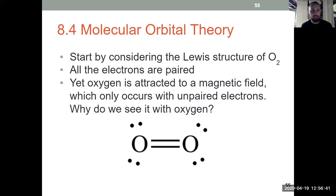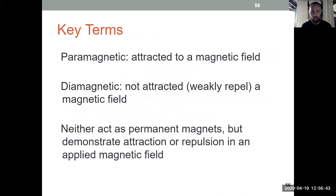So some key terms moving forward. Oxygen is paramagnetic. It's attracted to a magnetic field. So something that's not attracted to a magnetic field or weakly repels a magnetic field is diamagnetic. And those are two terms from this video that you definitely want to know, paramagnetic and diamagnetic. Keeping in mind that neither of them are acting as magnets, they're just responding to an applied external magnetic field.